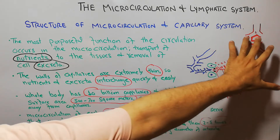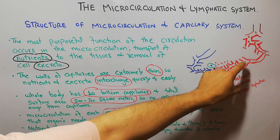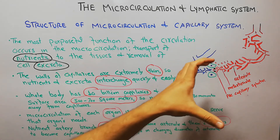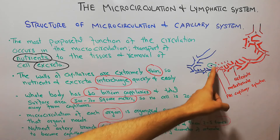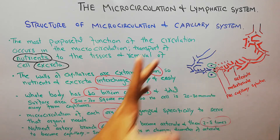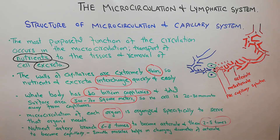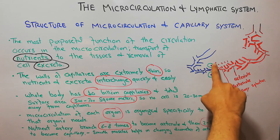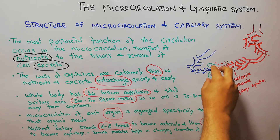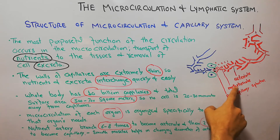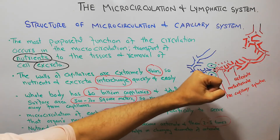The arteriole and metarteriole are surrounded by thick muscles which contract and relax to increase or decrease the capacity of the blood vessel, controlling blood supply to the tissue — whether kidney, liver, intestine, or skin. This control is regulated with the help of nutrients and excreta, because waste material acts on the precapillary sphincter and the muscles of the metarteriole and arteriole, causing contraction or relaxation.